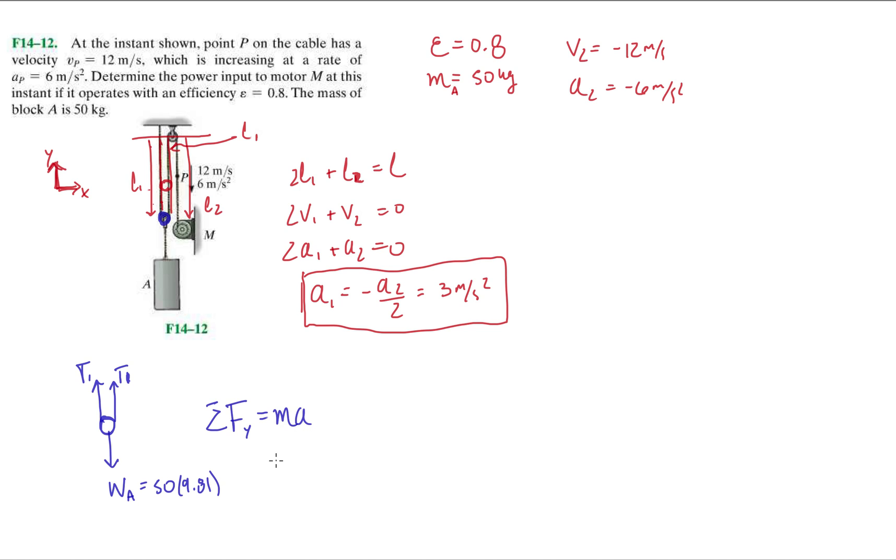You might have been like, let's just try it: 2T1 minus 490.5 equals 50 times A. And then you would have been like, shoot, I don't have A, so then you have to solve for it somehow.